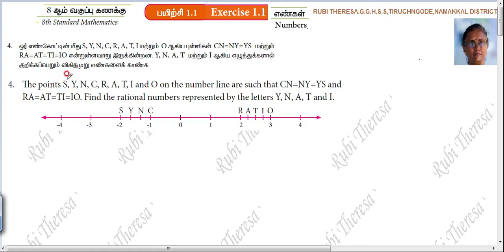The points S, Y, N, C, R, A, T, I and O on the number line R — such that CN equal to NY equal to YS equal parts. And RA equal to AT equal to AI equal to IO equal parts.